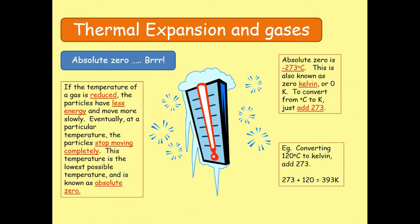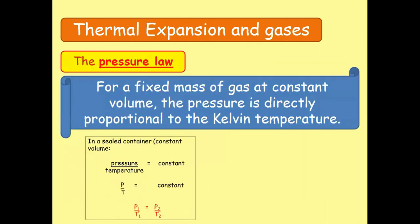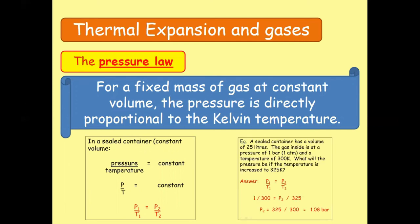The concept of absolute zero: absolute zero is zero kelvin, and zero kelvin equals minus 273 degrees Celsius. There is a relationship between pressure and temperature — for a fixed mass of a gas at constant volume, the pressure is directly proportional to the kelvin temperature. Kelvin is the SI unit of temperature. In physics, temperature is always taken in kelvin; we add 273 to convert degrees Celsius into kelvin.